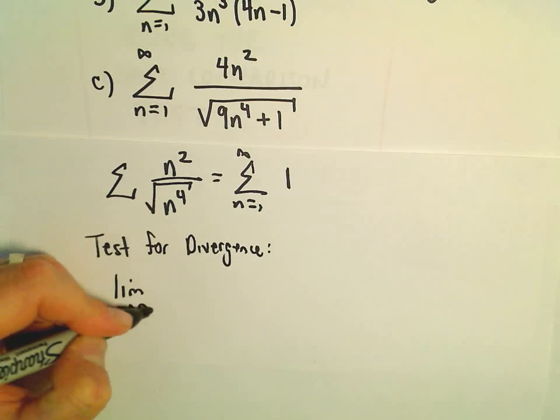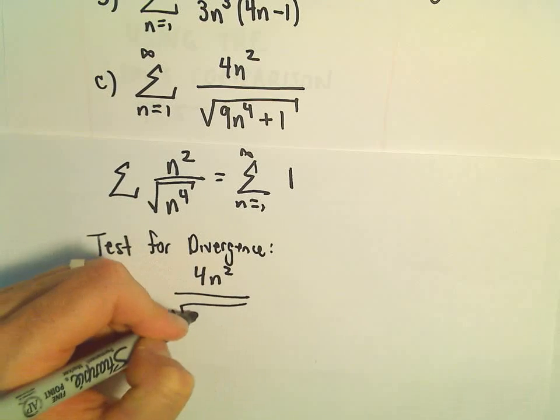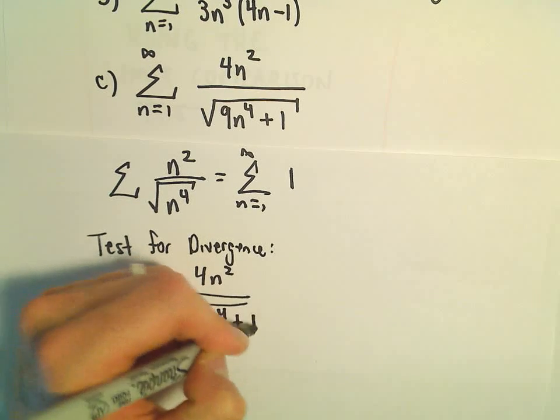Well, if we do the limit as n goes to infinity of 4n squared over the square root of 9n to the 4th plus 1.